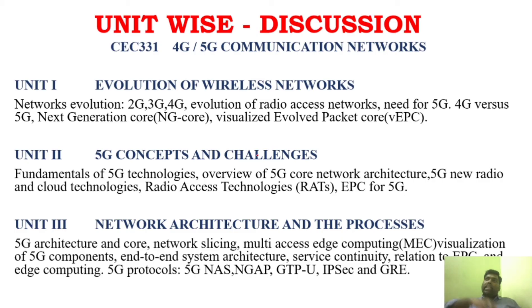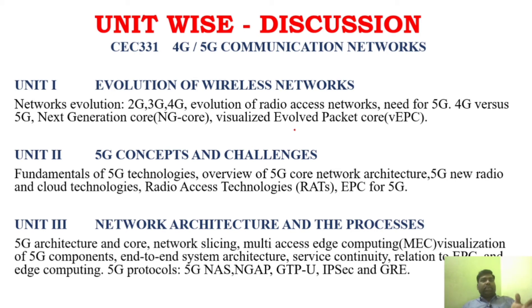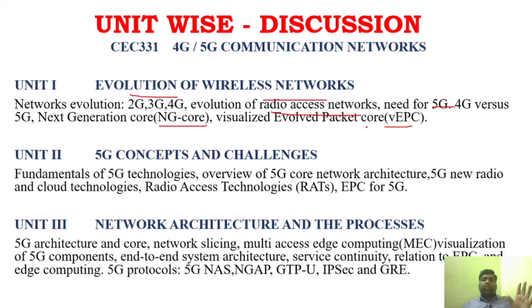You will have to study about 2G, 3G, and 4G evolution. It starts with GPRS, then CDMA, which leads to LTE — the 4th generation. In the flow, you need to understand it so you can write it in your own words. Also very important: evolution of radio access networks, the NG core, and VEPC (Virtualized Evolved Packet Core). This is a very important area — the evolution of 2G to 5G, radio access networks, and EPC.